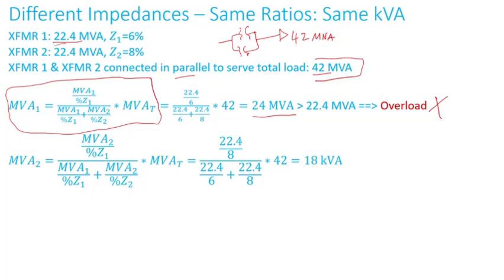If I do the same thing for transformer two, transformer two will carry 18 MVA. So 18 MVA is less than 22.4 MVA, meaning transformer two is within its rating.